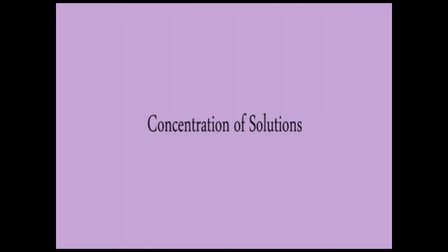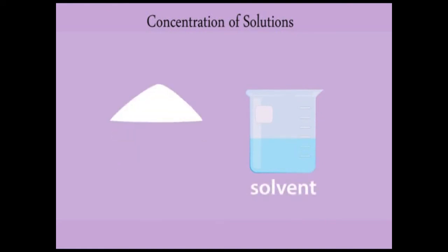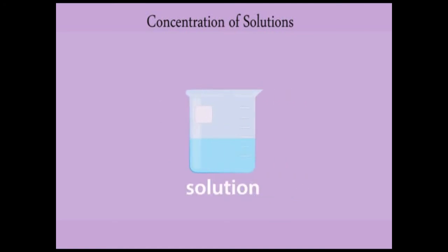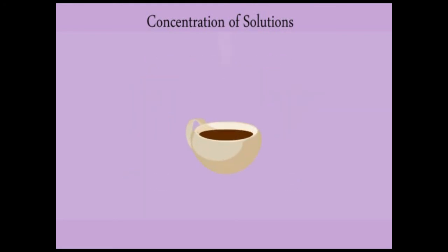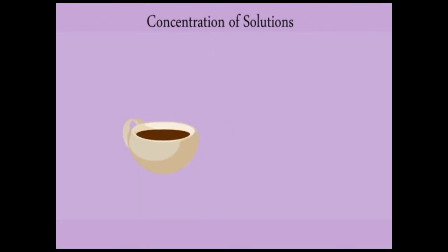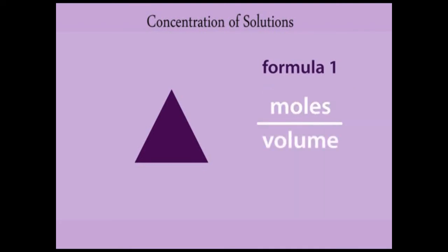Next: concentration of solutions. The concentration of a solution is a measure of the number of particles of a solute (a dissolvable solid) in a solvent (a dissolving liquid). A concentrated solution has more particles than a dilute solution — like adding more sugar to a drink to make it sweeter. Concentration can be calculated using the formula: moles of solute per unit volume, where moles = concentration × volume.